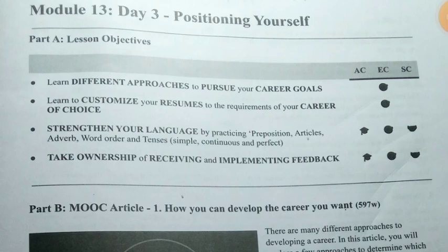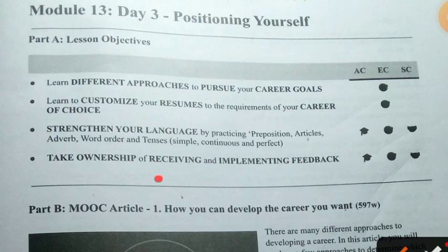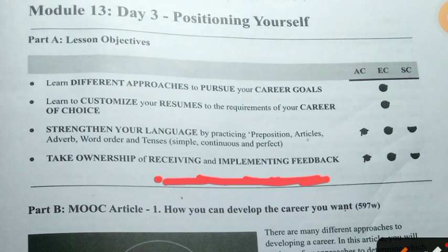The last lesson objective is to take ownership by receiving and implementing feedback. You have to take care of your feedback. You are getting feedback here, but in the future no one will correct you — people will only laugh at you. You have only two months left; after Module 16 you will graduate. So please practice a lot — your pronunciation, vocabulary, everything. Come to class punctually and talk with your partner.